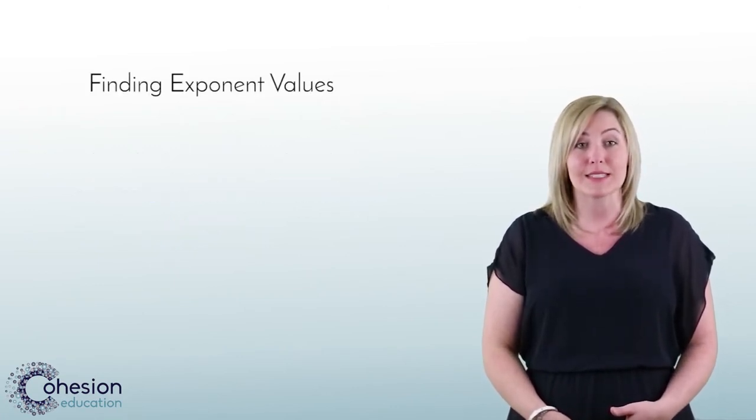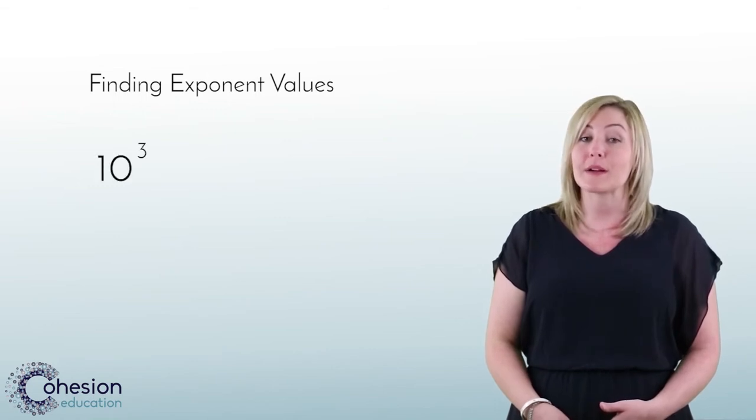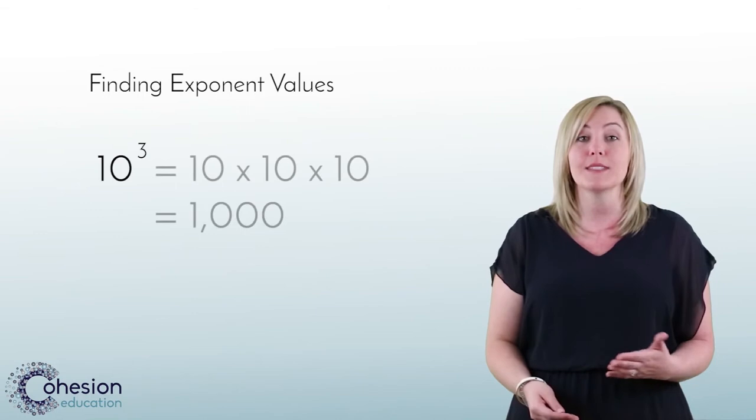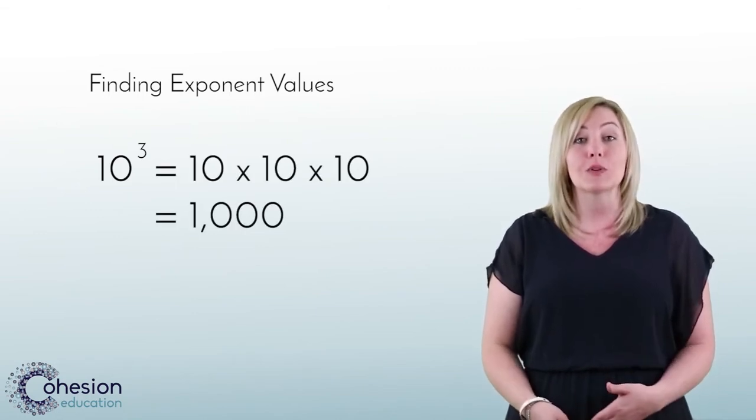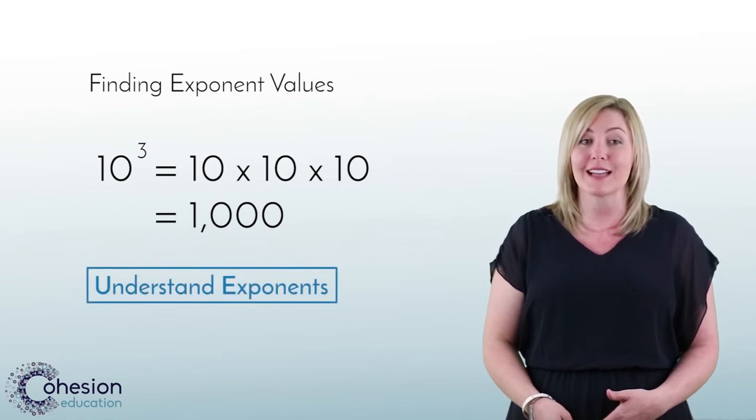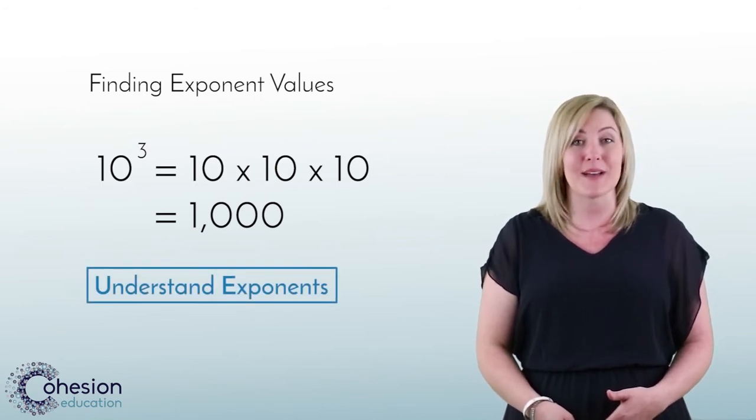To review, remember that the third power of 10 is the same thing as 10 times 10 times 10 for a total of 1,000. This is further explained in the Understand Exponents video. Please refer back as needed.